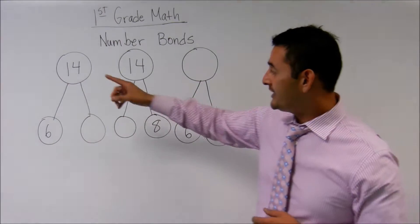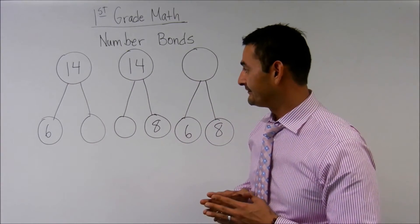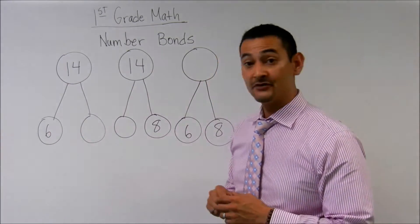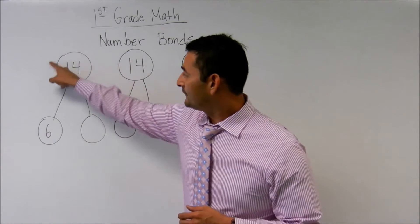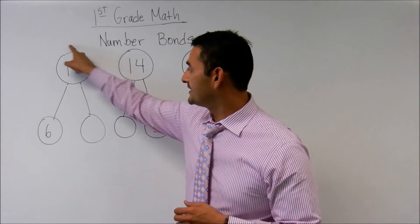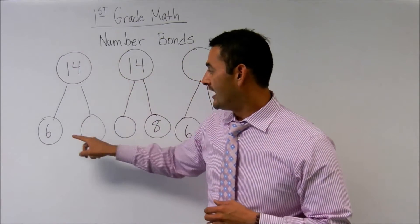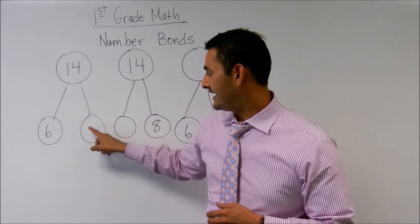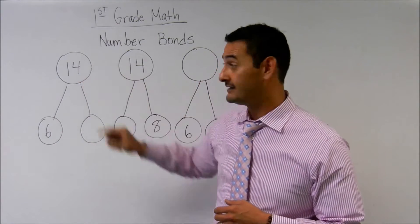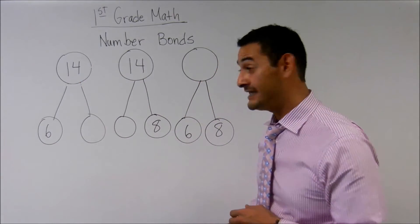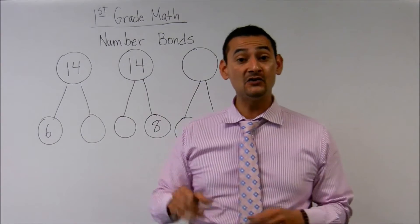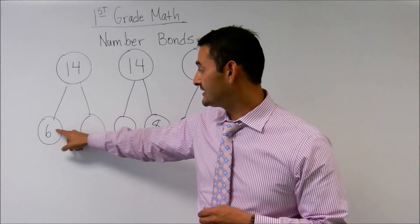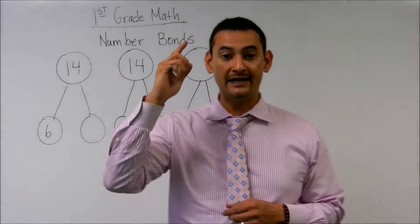Here I have the number 14, and here I have the number 6. The number 14 is the number that we want to get to. How do I make 6 and something turn into 14? Let's use the counting up method, so let's use 6 and let's count up to 14.